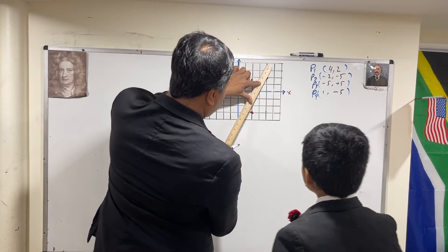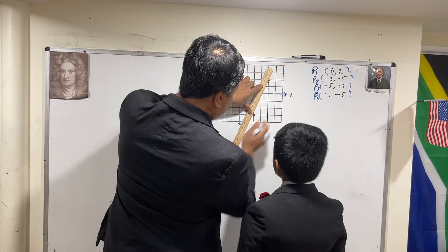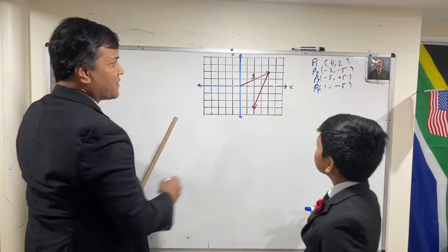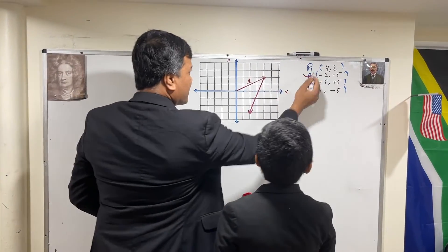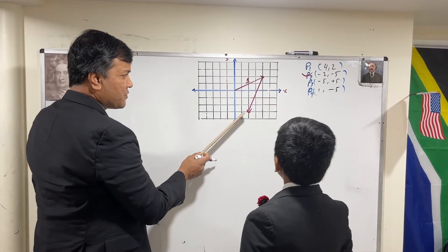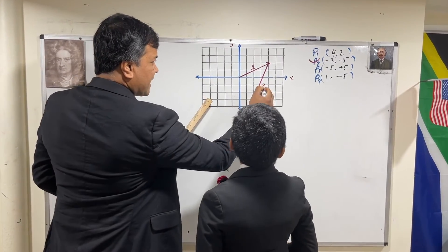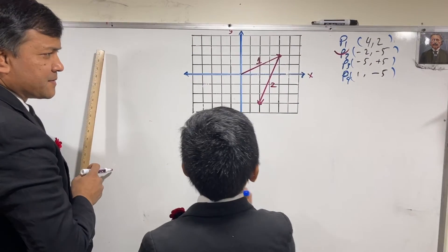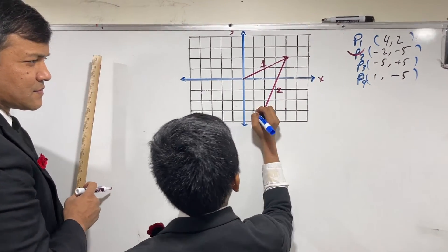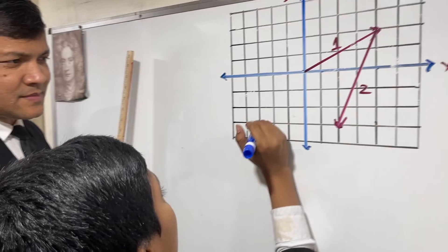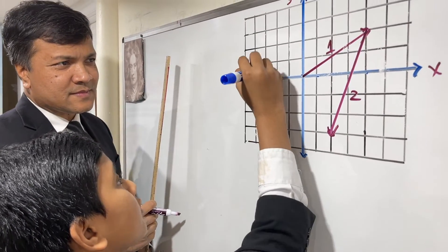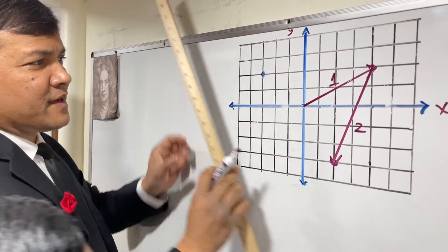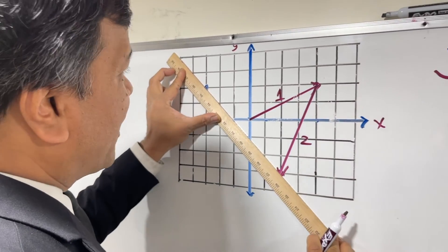We're going to keep getting a new head. In real life, if you keep getting a new head, it's going to be pretty annoying — it's stressful. Vector 3: go to the new head of vector 2 and count minus 5, plus 5. Minus 5: 1, 2, 3, 4, 5; plus 5: 1, 2, 3, 4, 5. That is correct. So we have a new head emerging.